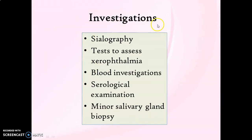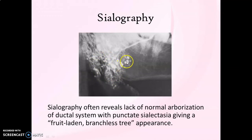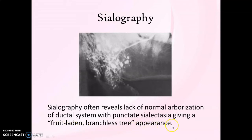Various investigations include sialography, tests to assess xerophthalmia or dry eyes, blood and serological examinations, and biopsy. On a sialographic image of a major salivary gland affected with Sjögren's syndrome, you will not find the normal branching or normal arborization of the ductal system. Instead, there are areas of punctate sialectasia, which are areas of ductal dilatation. This overall appearance produces a pattern termed as 'fruit-laden branchless tree' appearance.